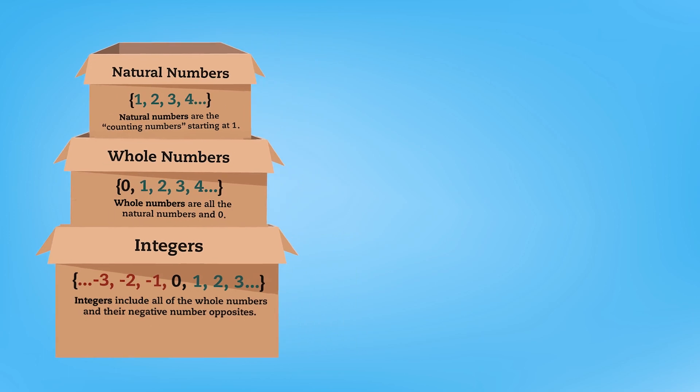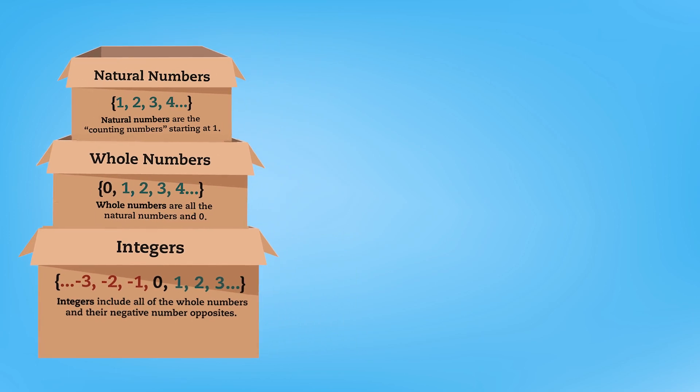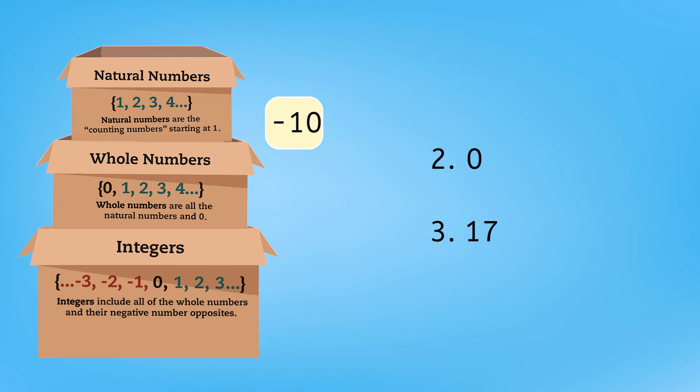For our first three practice problems, we want to categorize each of these numbers into all of its correct groups, so one number might fit into more than one category. Let's start with negative 10. Negative 10 isn't a natural number because we don't use it to count objects. It's also not a whole number because negatives aren't considered whole numbers. That means it's an integer.